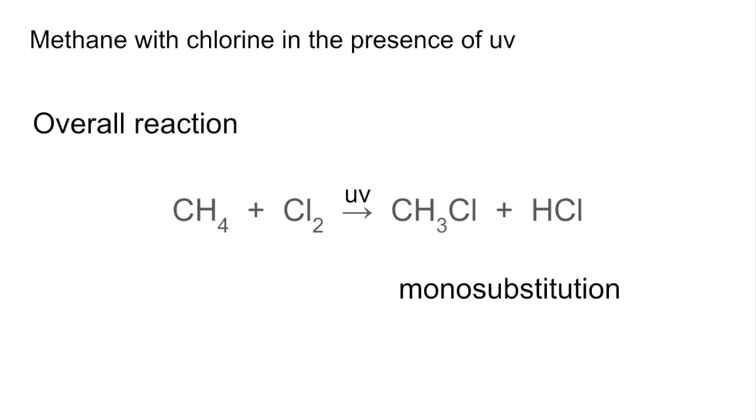So we'll look at the steps in the mechanism now. The first step is the initiation step. So what we've got is a chlorine molecule exposed to UV radiation and it's turned into two chlorine radicals. This dot here is representing an unpaired electron which makes this a radical.